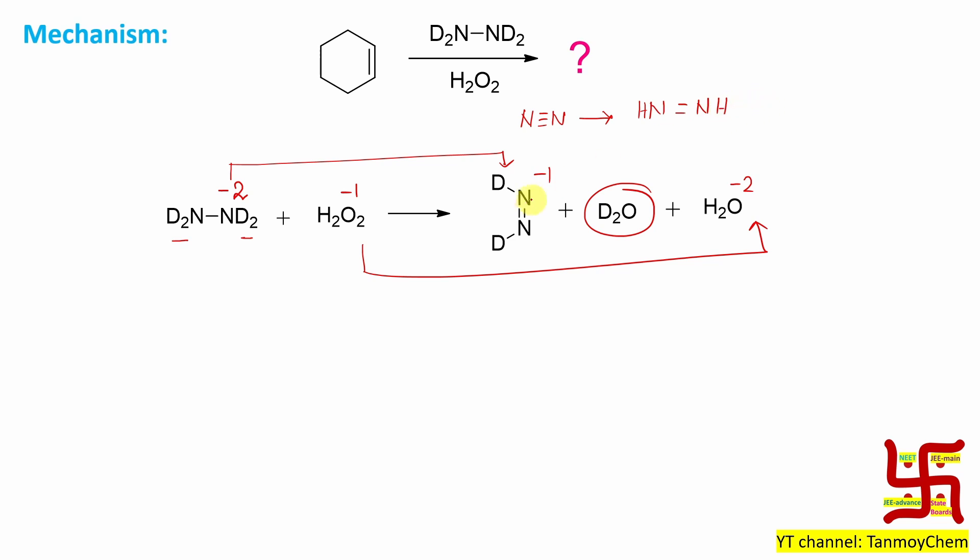Now here also diamide is produced but the deuterium version. And if you further reduce it will produce the hydrazine. And if you still reduce it it will produce the ammonia, actually two molecule ammonia.